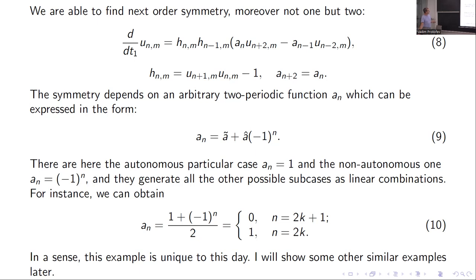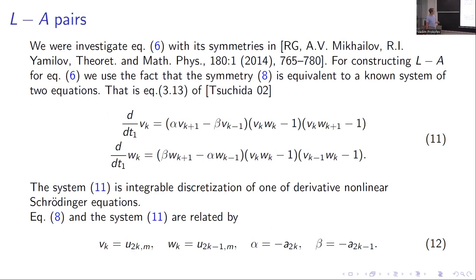Some later I will show some very similar examples. And now I want to discuss this example in more detail. First, we find the Lax pair for this example. The Lax pair is found in the following way, and for constructing this Lax pair we use the fact that the symmetry in any direction is equivalent to some known system of two equations.